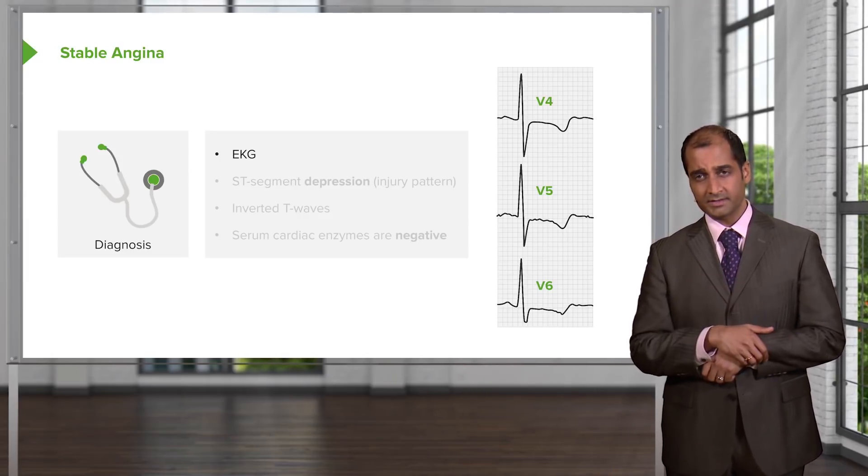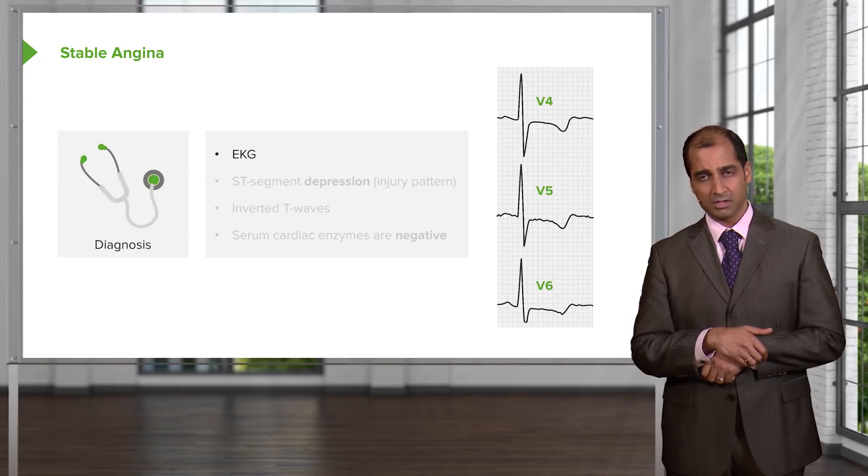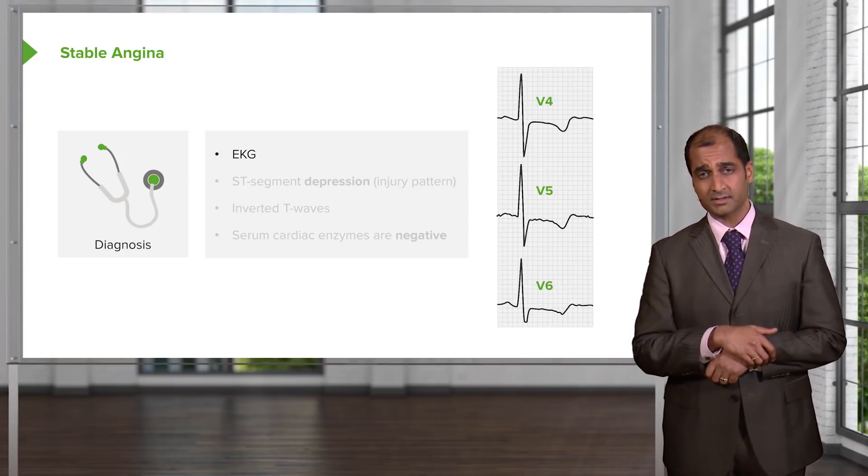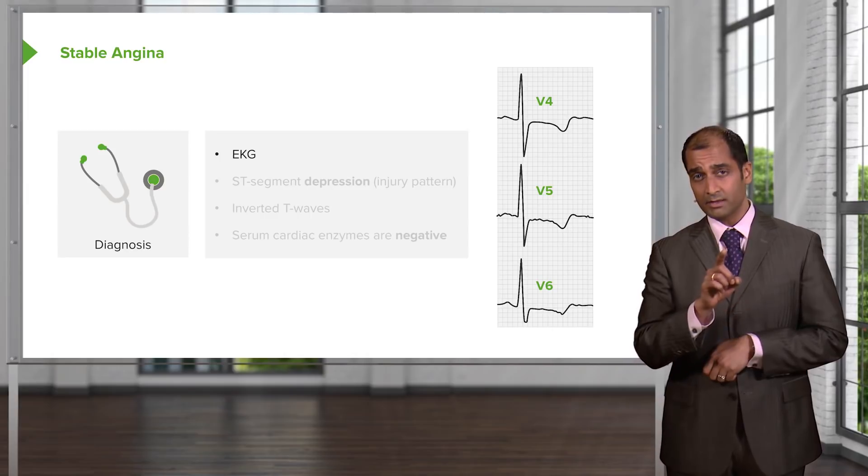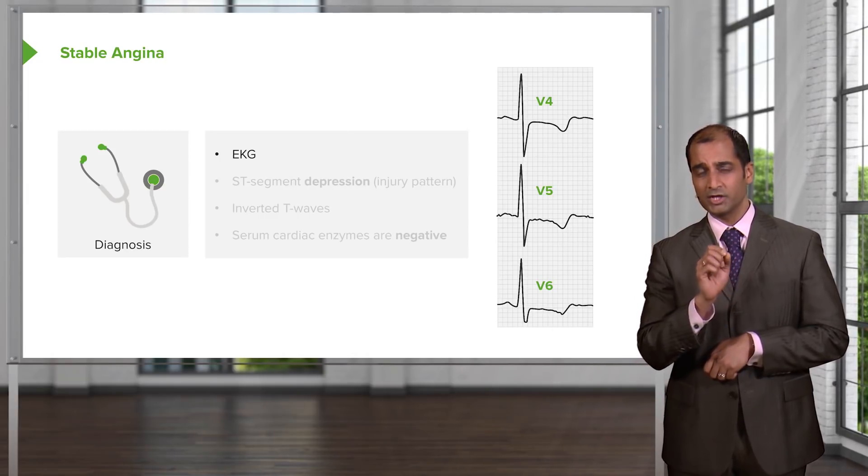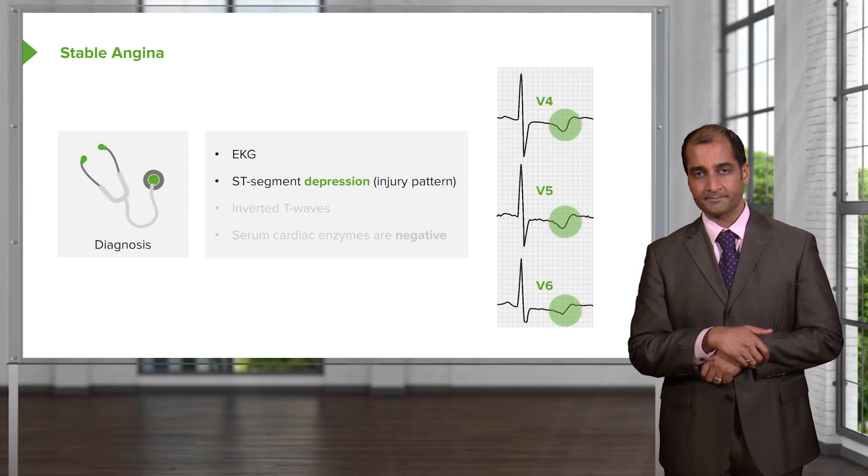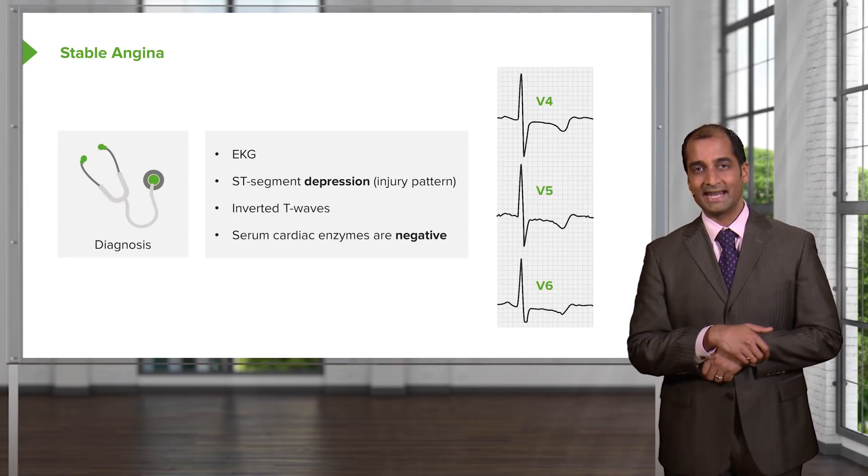What kind of change do you find here? You see that ST segment. Is it flat? No. Especially if you take a look at V5, V6. You find an ST depression. So you find ST depression, especially with the stress test. What about cardiac enzymes? Elevated or normal? Normal. Nice job. ST segment depression. Inverted T wave. Serum cardiac enzymes? Negative.